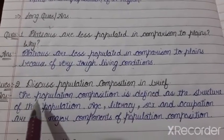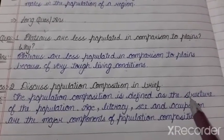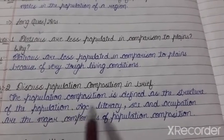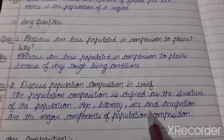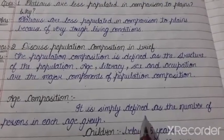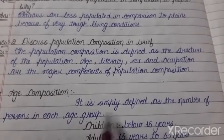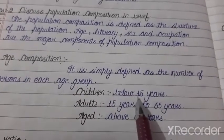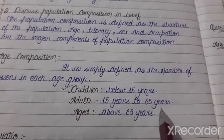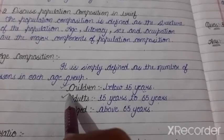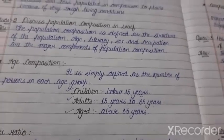Question two: discuss population composition in brief. Population composition is defined as the structure of the population. Age, literacy, sex, and occupation are the major components of population composition. Age composition is defined as the number of persons in each age group: below 15 years are children, 15 to 65 years are adults, and people above 65 years of age are the exit group.